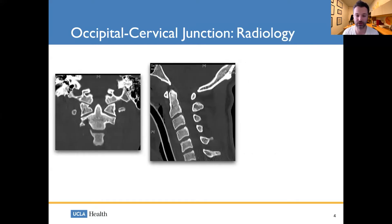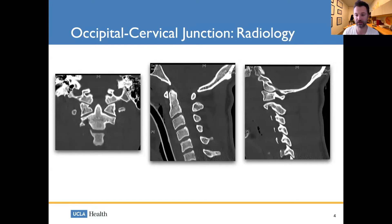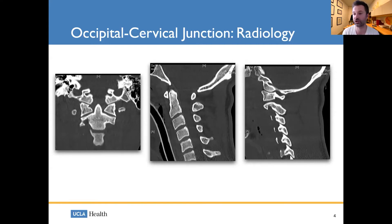These are important views to look at when evaluating a patient. A coronal CT view shows the alignment between the occiput, C1, and C2. The sagittal view shows the distance between the skull base and the dens, and the lateral view shows the joint spaces between the occiput, C1, and C1 and C2.